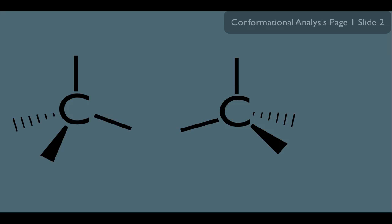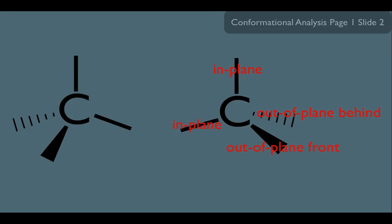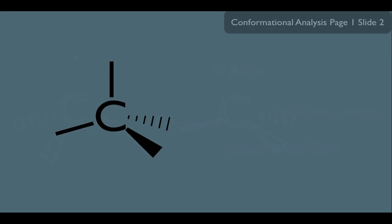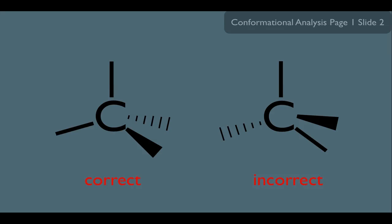What I want to show you is what has to always be true when you represent a carbon this way. These two bonds right here are called your in-plane bonds, because they are in-plane with the screen or the paper. Whereas these bonds right here are your out-of-plane bonds — one coming out in front, and one going behind the screen. The two in-plane bonds always have to be adjacent to each other, and the two out-of-plane bonds need to be adjacent to each other as well.